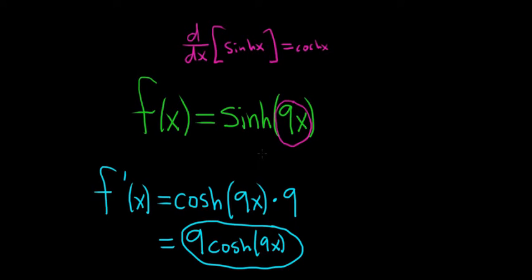So again, to take the derivative of sinh(9x), you take the derivative of sinh and evaluate it at the inside, leaving the inside untouched. The derivative of sinh is cosh, so you get cosh(9x) times the derivative of the inside.